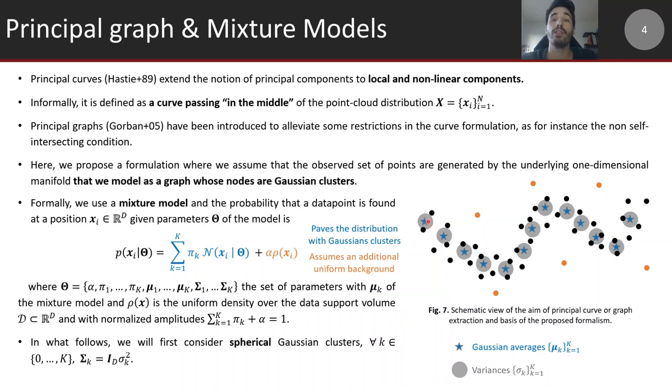This is what we call a mixture model. We assume that the galaxy distribution can be paved by a set of k Gaussian components with an additional uniform background to take into account points that are not part of the pattern, like outliers or galaxies standing in walls or voids. The probability of finding a galaxy at position x_i is obtained by the summation of all k Gaussian clusters with their own amplitudes plus the uniform background component. The parameters are the set of all amplitudes plus the positions of the Gaussian clusters plus their covariances. We focus on spherical Gaussian clusters.